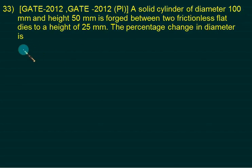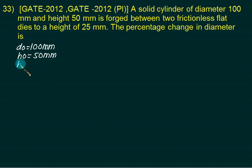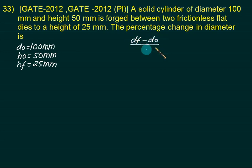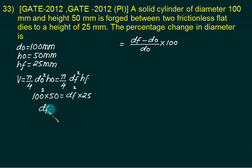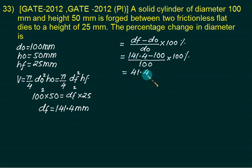Example 2: A solid cylinder with D0 = 100 mm and H0 = 50 mm is forced between frictionless flat dies to HF = 25 mm. Percentage change in diameter = (DF − D0) / D0 × 100. Using volume conservation: 100² × 50 = DF² × 25, so DF = 141.44 mm. The answer is 41.4%, positive sign indicating an increase.